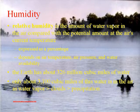Humidity is the amount of water vapor in the air compared to the potential amount at the current temperature — expressed as a percentage. It depends on air temperature, air pressure, and the amount of water present. In total, there are about 326 million cubic miles of water on earth, but only about 3,100 cubic miles are in the air at any given time as water vapor, clouds, or precipitation.